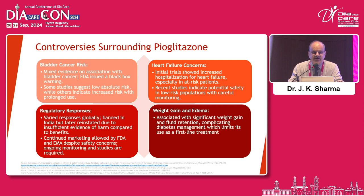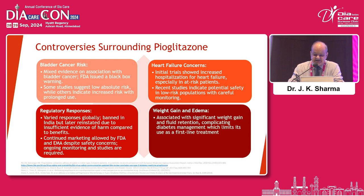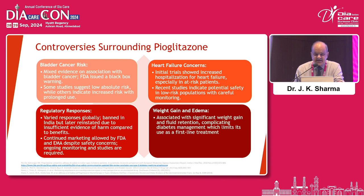There are certain controversies surrounding pioglitazone. Regarding bladder cancer risk, there is mixed evidence on association with bladder cancer; the FDA issued a black box warning, with some studies suggesting low absolute risk while others indicate increased risk with prolonged use. Regarding heart failure, initial trials showed increased hospitalization for heart failure especially in at-risk patients, while recent studies indicate potential safety in low-risk populations with careful monitoring. It is also associated with significant weight gain and fluid retention, complicating diabetes management and limiting its use as first-line treatment. However, with careful patient selection, this drug is really wonderful. The regulatory responses varied globally — it was banned in India but later reinstated due to insufficient evidence of harm compared to benefits. Continued marketing was allowed by FDA and EMA despite safety concerns, and ongoing monitoring and studies are required.